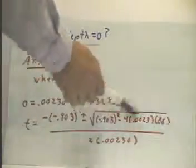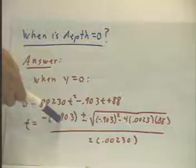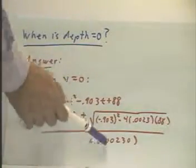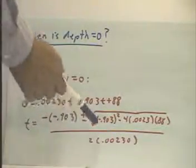If the discriminant is zero, then we'll have plus or minus zero, and we'll just get one solution, 0.903 divided by whatever we get when we multiply this denominator out, 0.00460.